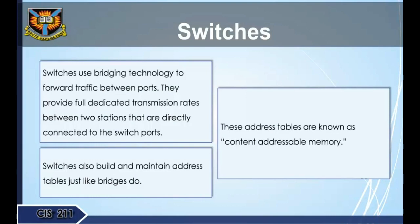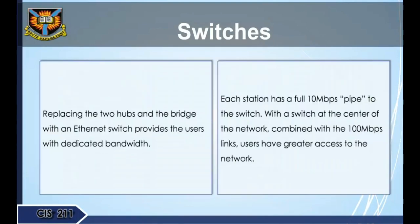Switches use bridging technology to forward traffic between ports. They provide full dedicated transmission rate between two stations directly connected to the switch ports. Switches also build and maintain address tables — known as content addressable memory — just like bridges do. Replacing hubs and bridges with an Ethernet switch provides users with dedicated bandwidth. Each station has a full 10 Mbps pipe to the switch, and with 100 Mbps links, users have greater access to the network.